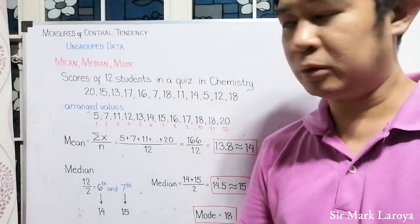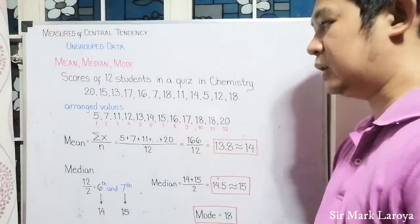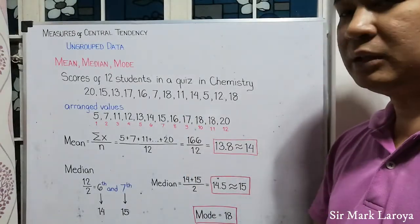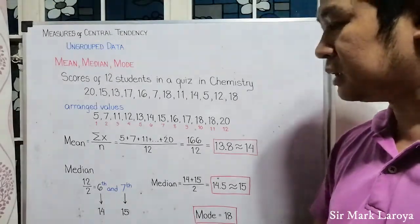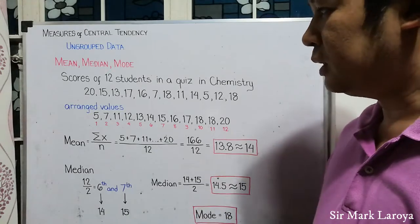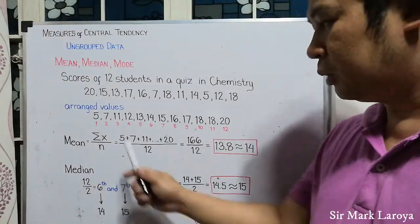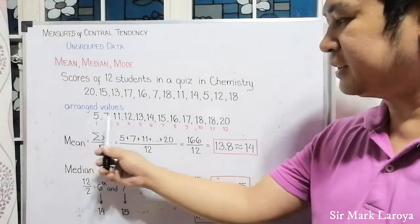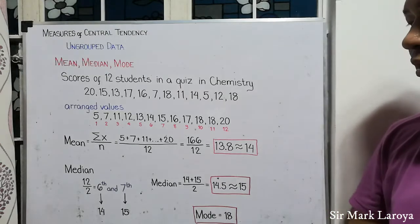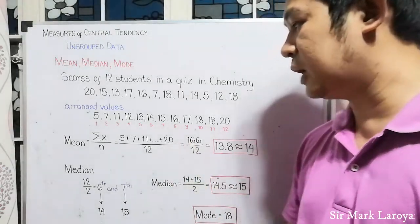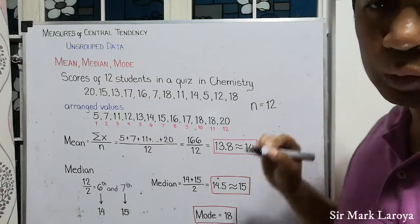Let us solve another example. Scores of 12 students in a quiz in chemistry are 20, 15, 13, 17, 16, 7, 18, 11, 14, 5, 12, and 18. So, before we solve the mean, median, and mode, what I did here is I already arranged the values from lowest to highest. So, there are 5, 7, 11, 12, 13, 14, 15, 16, 17, 18, 18, and 20. So, a total of 12 values. So, that means our n, or the sample size, is equal to 12.